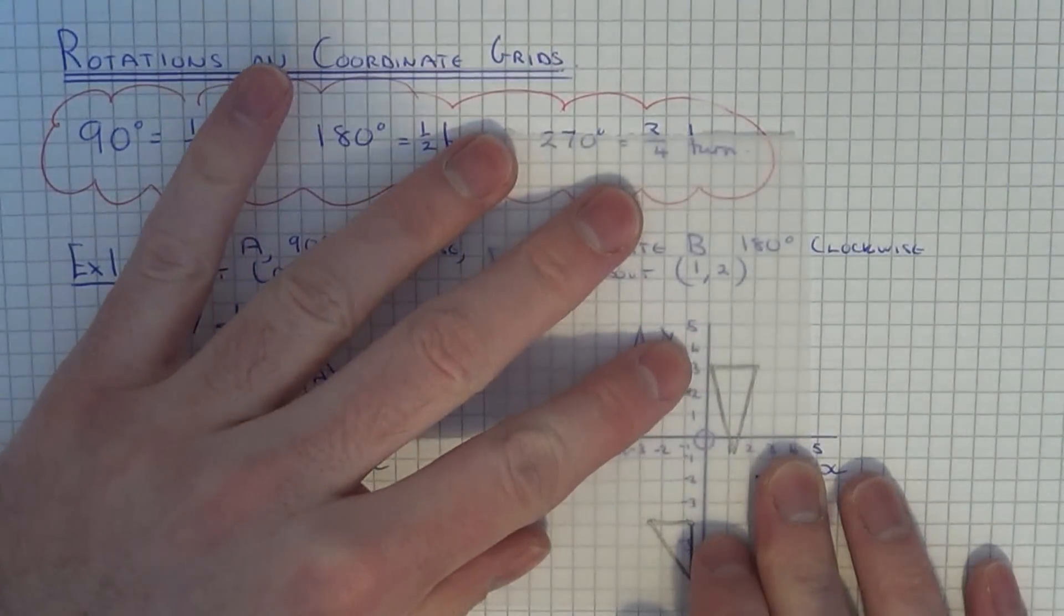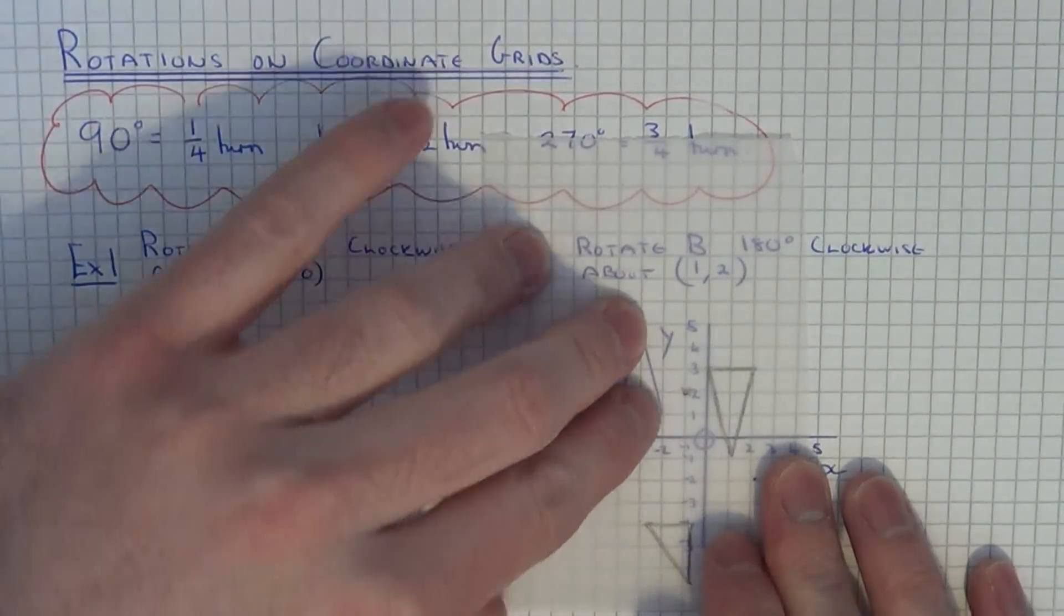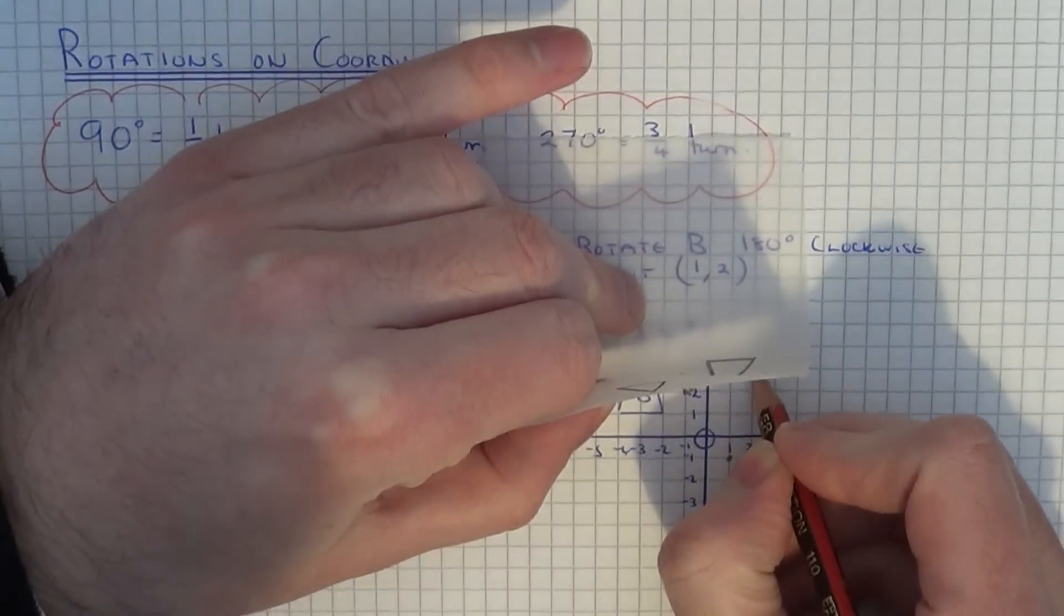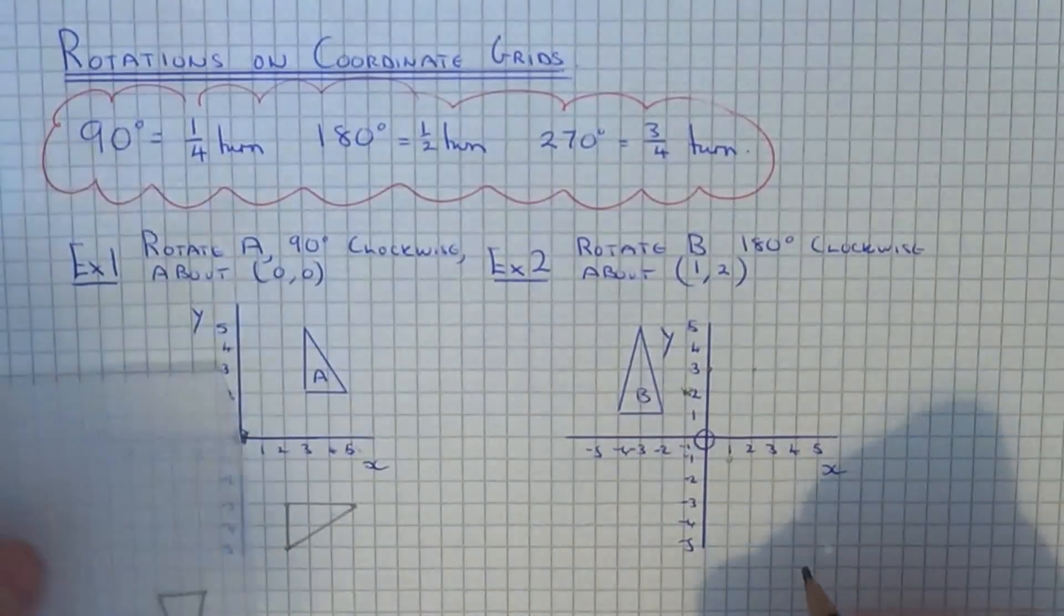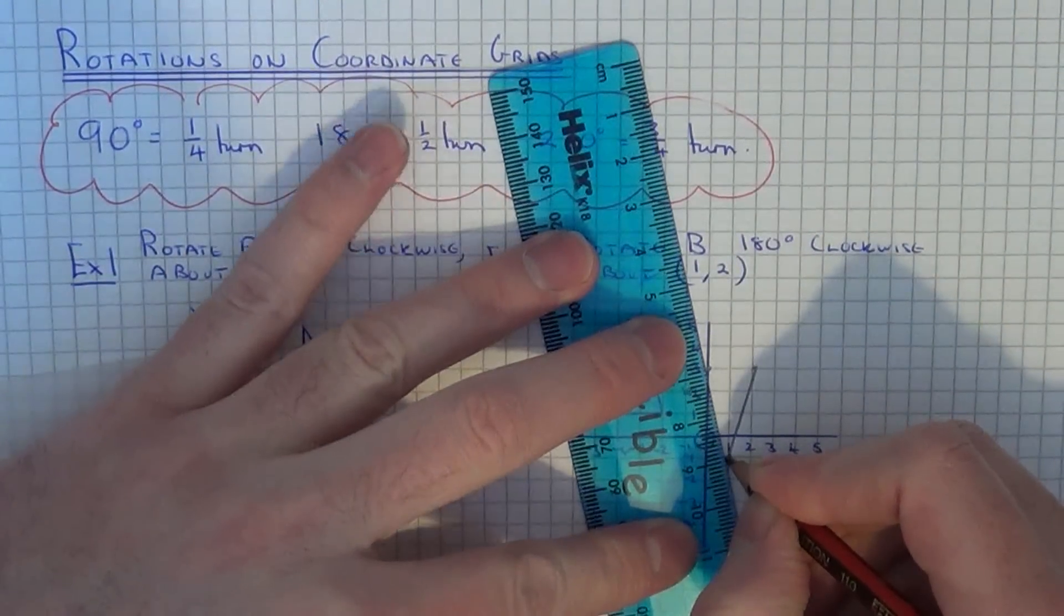Take your pencil off. Nudge the tracing paper to make sure the shape is fitting nicely onto the corners. Mark these corners out. Then just join the points up neatly using your ruler.